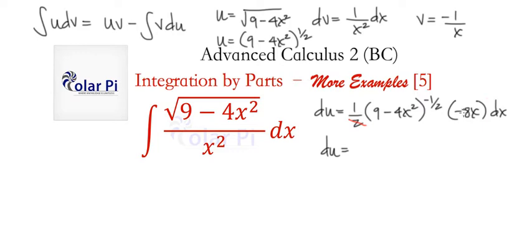We can clean this up a little bit. This 1/2 and negative 8x reduce to a negative 4x. But otherwise, not much else to do. So let's write negative 4x divided by—let's take this in the denominator and write it with a positive exponent—9 minus 4x squared to the 1/2 power.